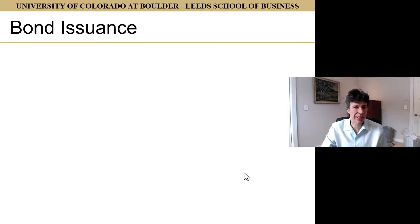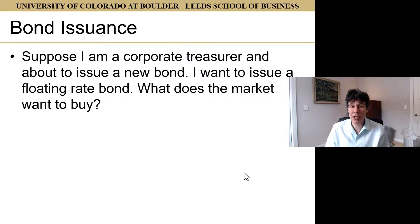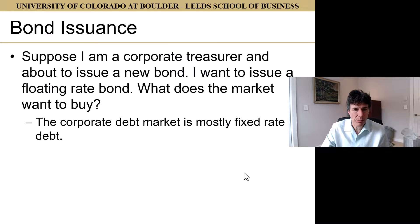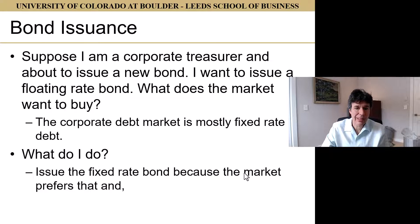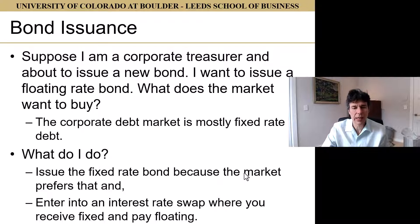For bond issuance: if you're a corporate treasurer wanting to issue a floating rate note, but the corporate bond market typically prefers fixed rate debt, you issue a fixed rate bond and simultaneously enter into an interest rate swap receiving fixed and paying floating. The fixed payments cancel out, and you've effectively issued a floating rate note.